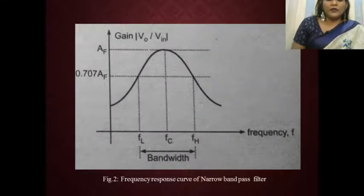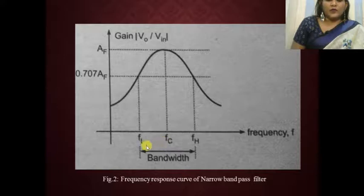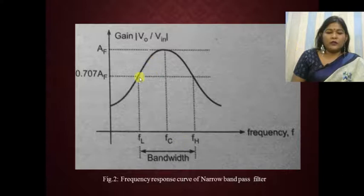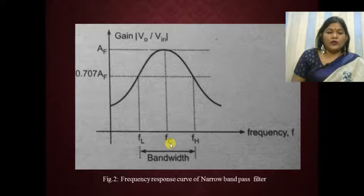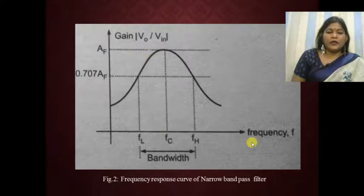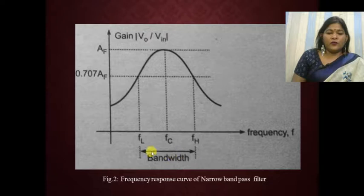Here is the frequency response curve of the narrowband pass filter. As you can see, the bandwidth is narrower compared to other band pass filters. The curve shows the high cutoff frequency FH, the low cutoff frequency FL, and the center frequency FC. The horizontal axis represents frequency and the vertical axis represents gain, with the bandwidth defined between FH and FL.